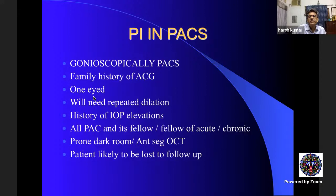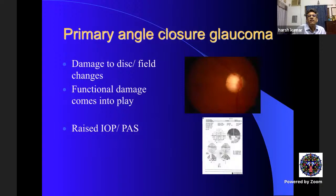Be cautious — if a totally normal patient comes for a routine checkup and you find PACS and do a PI, and later they develop high pressure or cataract, you have converted a normal person into an abnormal one. We must be very careful and cannot do PI in all situations indiscriminately.